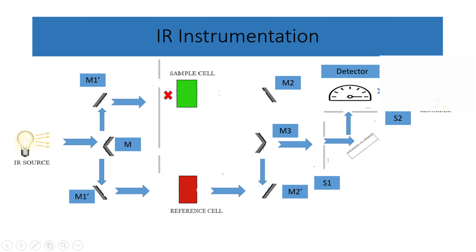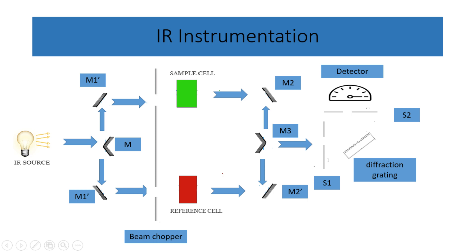Subsequently, the light reaches a diffraction grating, which disperses it into different wavelengths, enhancing the resolution of the obtained spectrum. After passing through the grating, the light enters the detector.